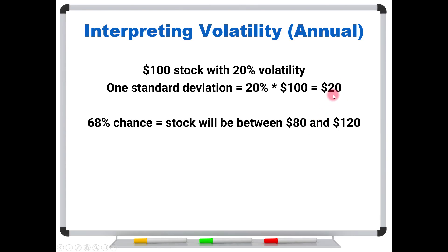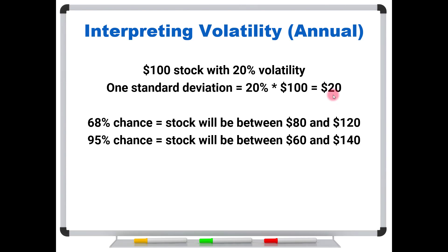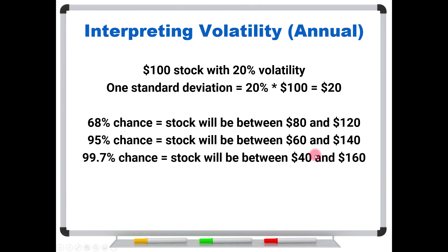If a one standard deviation move is $20, then two standard deviations is $40. So I could say that this $100 stock is probably going to be between $60 and $140 in a year, and I have 95% confidence in that prediction. And then for the third standard deviation, we take three times $20, which is $60, and add and subtract it from our current stock price. We get a range of $40 to $160, and I'm almost 100% certain the stock will fall somewhere in that range within a year.